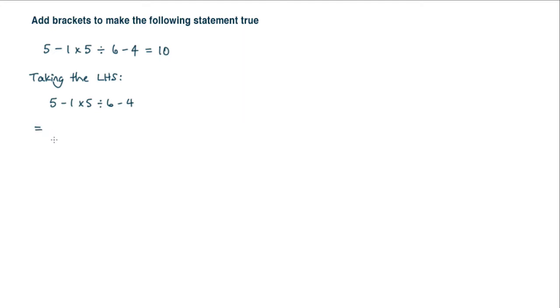So let's go ahead and work with this. Now the first place I could put brackets is here. So let's try that. Now using the rules of BODMAS, the first calculation I'll do is this bracket, and 5 minus 1 is 4. So we've got 4 multiplied by 5 divided by 6 and subtract 4.